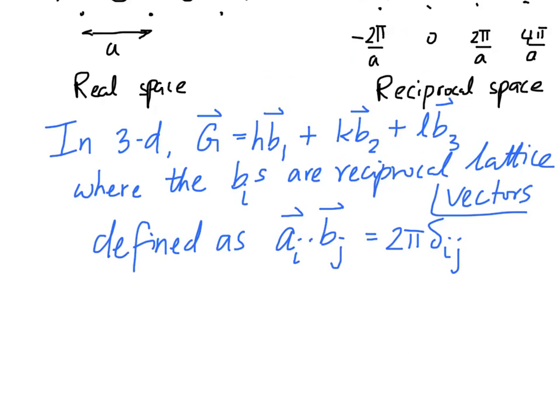meaning δᵢⱼ = 0 if i is not equal to j, and δᵢⱼ = 1 if i equals j. And, of course, the aᵢ's are the real space unit vectors which allow us to define the translational invariance in the real space lattice.